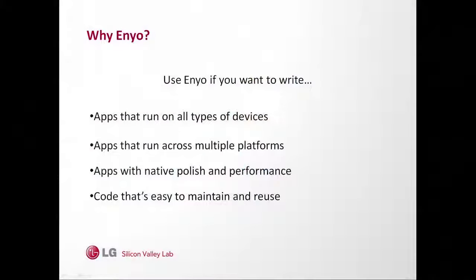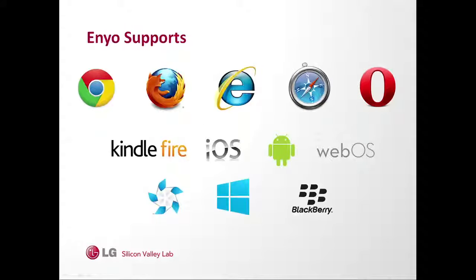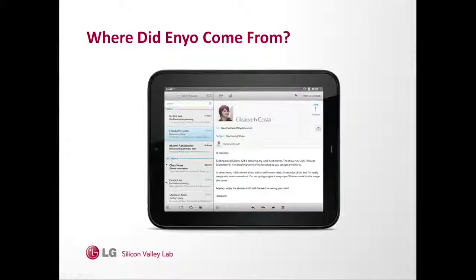Why would you use Enyo? By using Enyo, you only have to write an application once, and it will run across all platforms and devices. You can create apps with polish and performance that stand up to any native apps, with a professional UI widget set. Supported platforms include all major browsers — Chrome, Firefox, IE, Opera, Safari — and most mobile devices: iOS, Android, WebOS, Tizen, Windows 8, Windows Phone 8, and BlackBerry. Basically, anything with a modern WebKit browser will usually run well.